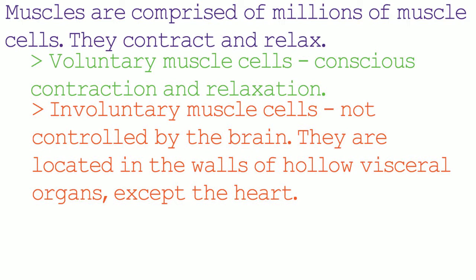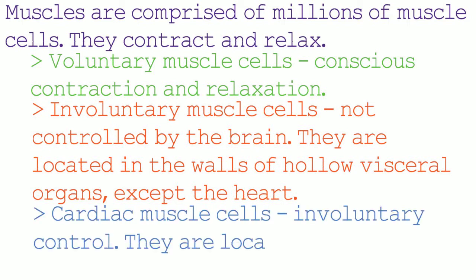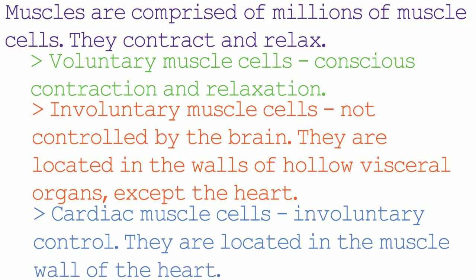The final type of muscle is cardiac muscle cells. These muscle cells are located in the muscle wall of the heart. They are under involuntary control, which means that the brain does not consciously have control over them. So that's the three types of muscle cells: voluntary muscle cells which are under conscious control from the brain; involuntary muscle cells which are not under control by the brain and are located in hollow visceral organs except the heart; and cardiac muscle cells which are located in the muscle wall of the heart.